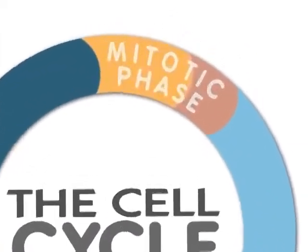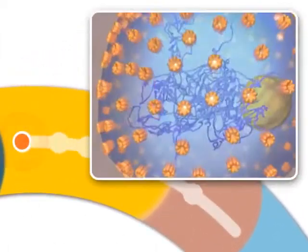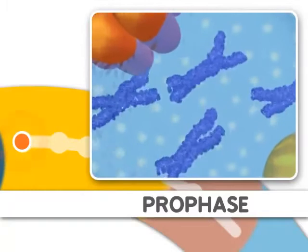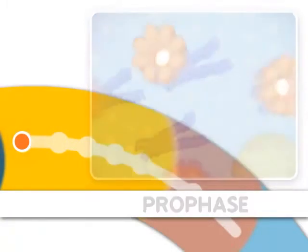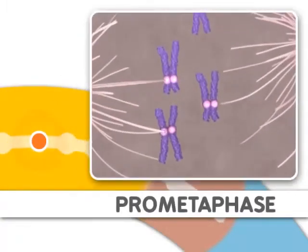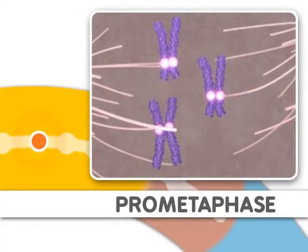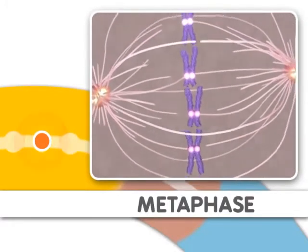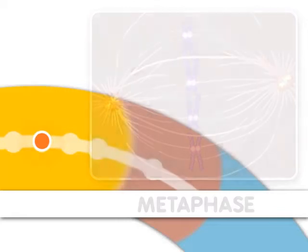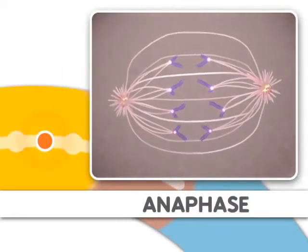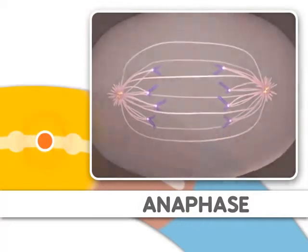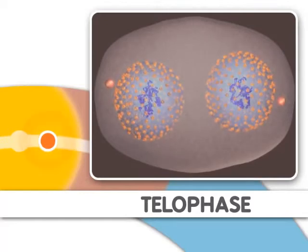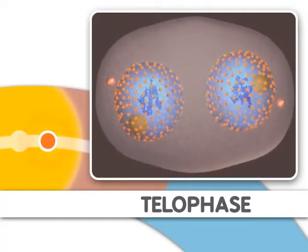Mitosis is split into distinct stages. The first stage is prophase, where the DNA condenses, organizes, and the classic chromosome structure appears. Next comes prometaphase, where microtubules attach to the chromosomes. This step is followed by metaphase, where the chromosomes align. Metaphase is followed by anaphase, where the chromosomes separate. Finally, during telophase, nuclear membranes reappear around the two sets of chromosomes. Mitosis is now complete.